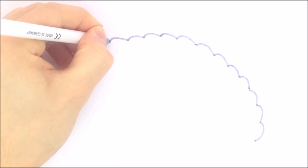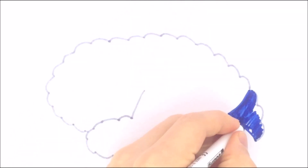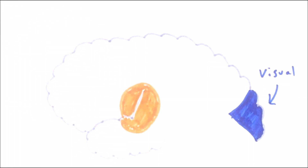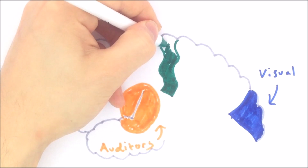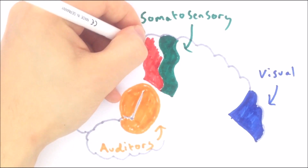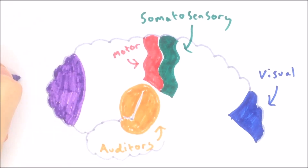Different areas of the neocortex perform different functions. A few of the main areas are: the visual cortex at the base of the occipital lobe, which processes visual information; the auditory cortex at the top of the temporal lobe, which processes sound; the somatosensory cortex at the front of the parietal lobe, which processes information about touch; and the motor cortex at the back of the frontal lobe, responsible for organizing and performing movements.